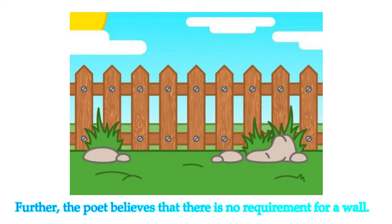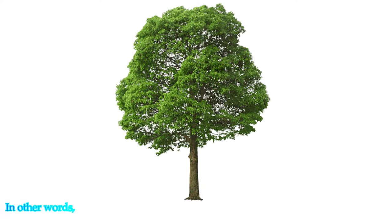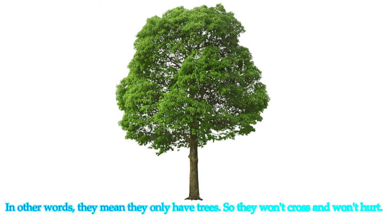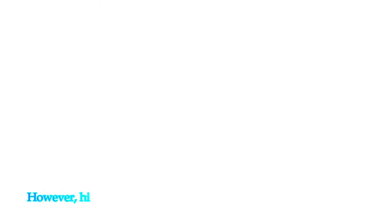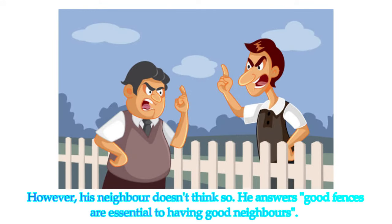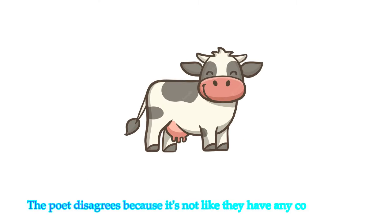The poet believes that there is no requirement for a wall. In other words, they only have trees, so they won't cross and won't hurt. However, his neighbor doesn't think so. He answers that good fences are essential to having good neighbors. The poet disagrees because it's not like they have any cows to cross.